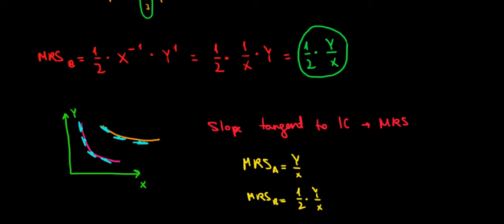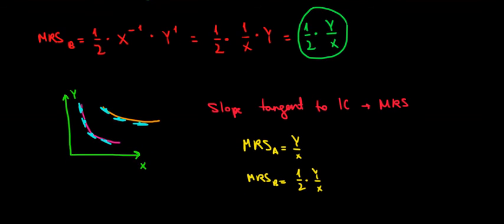It means that the MRS of consumer B is half than the MRS of consumer A, meaning that this one is smaller. So if this one is smaller than the MRS of consumer A, that means that this one is flatter. A smaller MRS means a flatter slope. Whereas a higher MRS value means a higher slope, means a steeper slope tangent to the indifference curve.